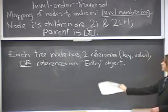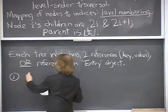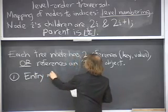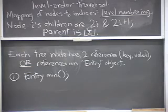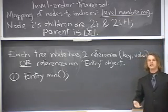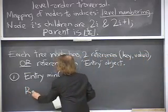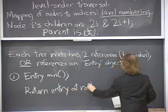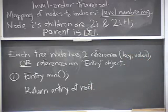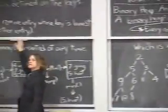Now let's look at how to implement the three operations on a binary heap. The min operation just returns the entry with the minimum key. That one's really easy because the heap order property guarantees the entry with the minimum key is always at the root of the tree — so just return the entry at the root. Very easy.